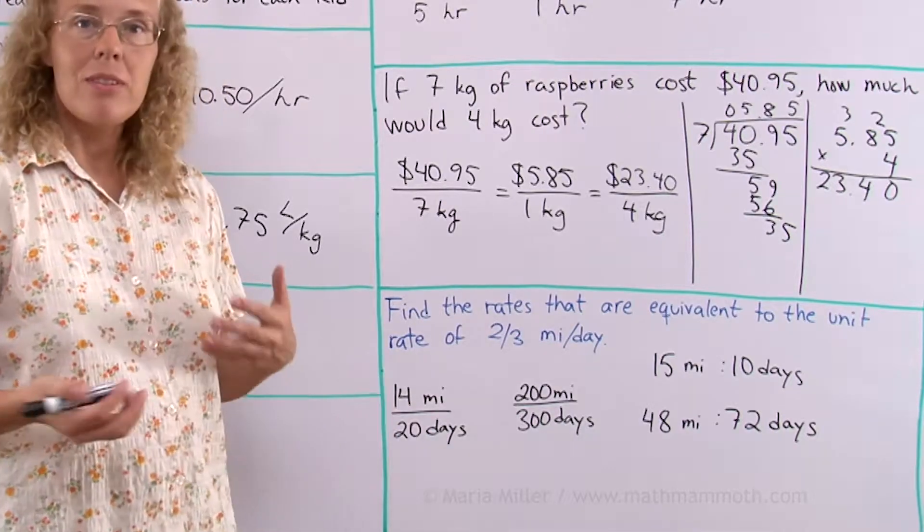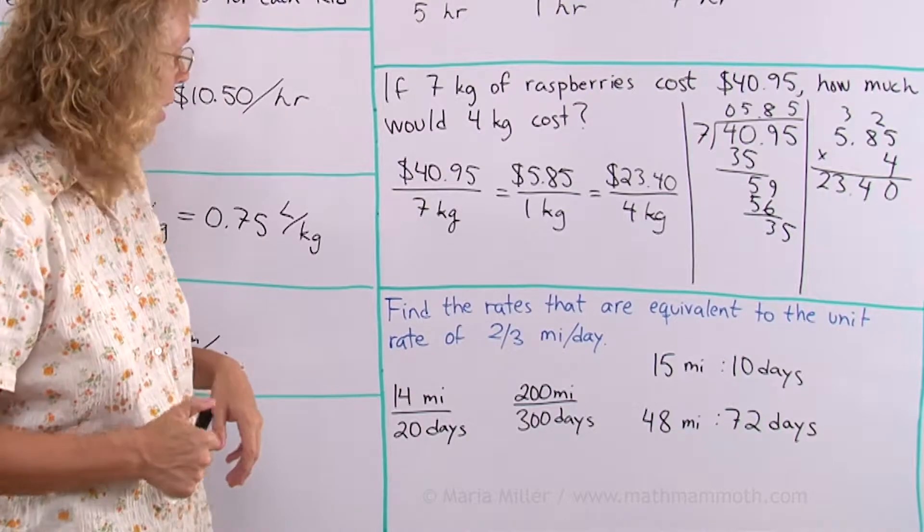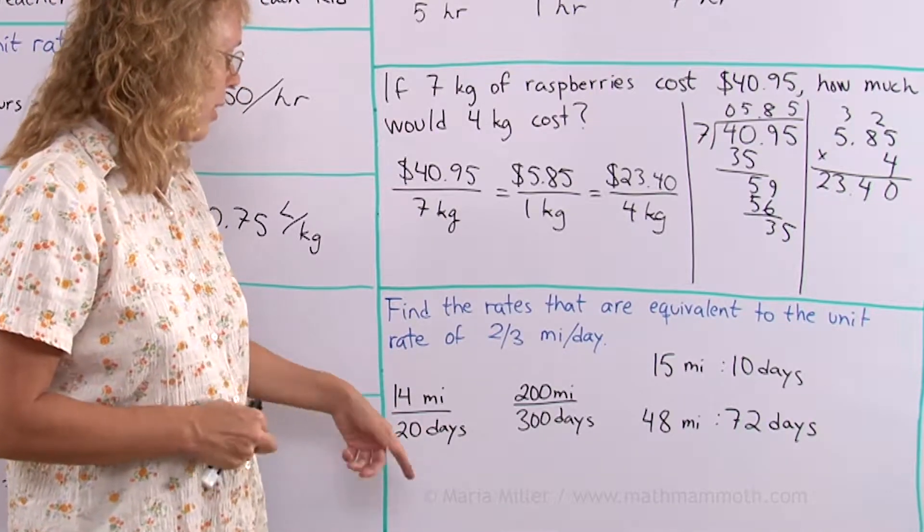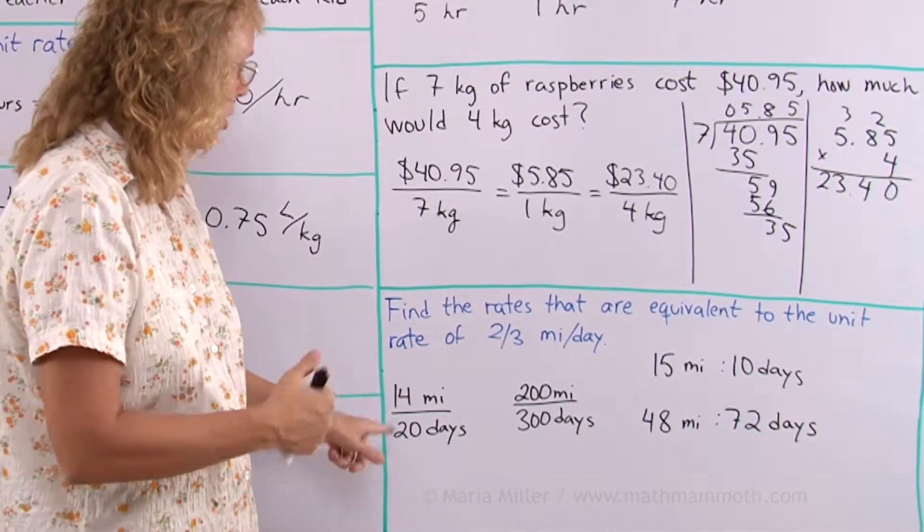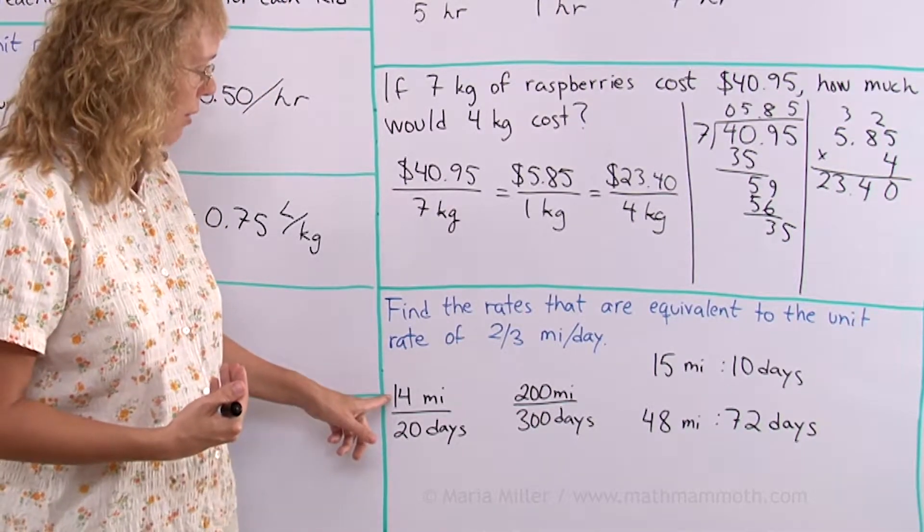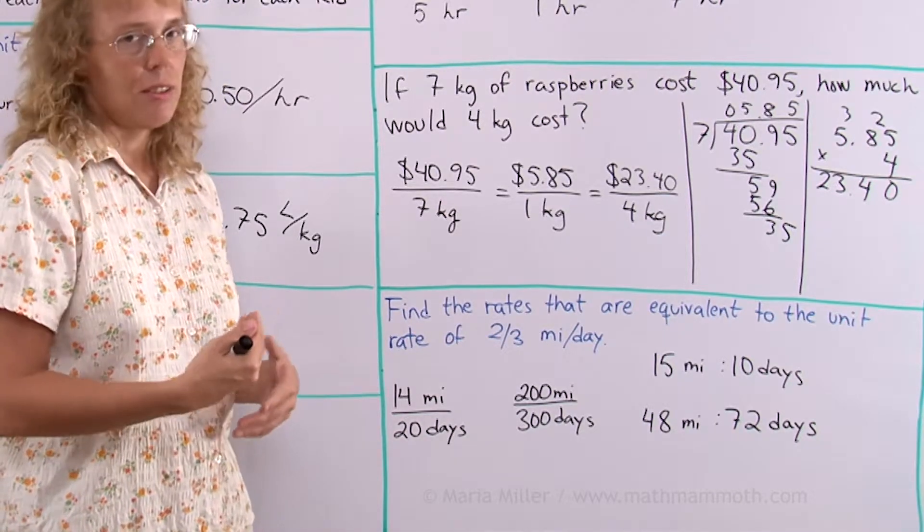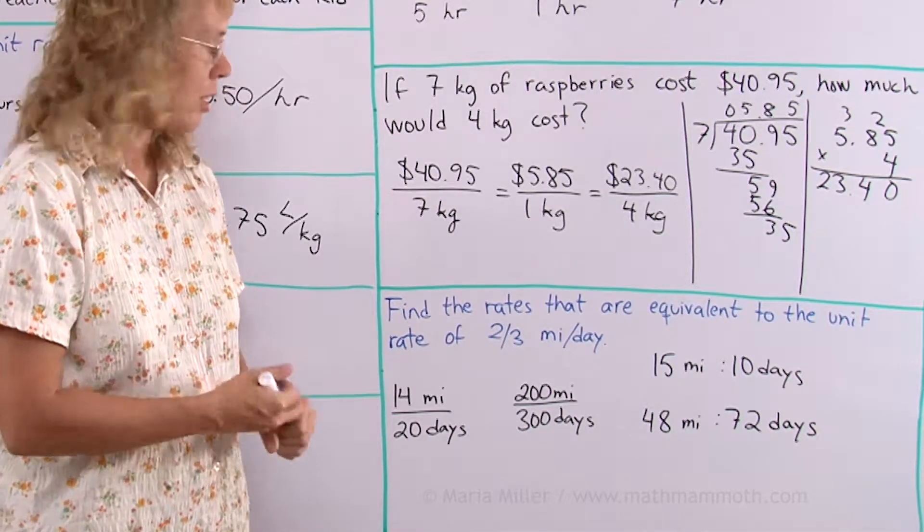Which one of these would be equivalent to that? These are not unit rates. But we will just do the divisions here and check if we get 2 thirds. 14 divided by 20. I am going to simplify this rate and check if I get 2 thirds. Both of these are divisible by 2. But if I divide, I will get 7 tenths. That's not equal to 2 thirds. So this is not.